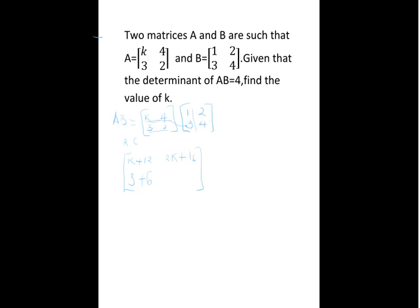On the other one, we have the same row, we multiply by the second column, we will have 3 multiplied by 2, 6, 2 multiplied by 4, 8. So, our matrix will be, K plus 12, 2K plus 16, then down here we have 9 and 14.